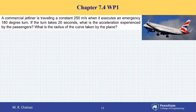Hello and welcome back. Here we have a commercial jetliner that is traveling at a constant speed of 250 meters per second when it executes an emergency 180 degree turn, that is half a circle.